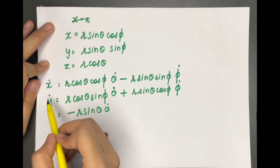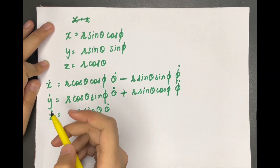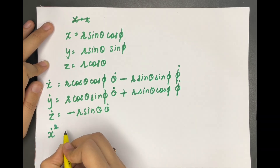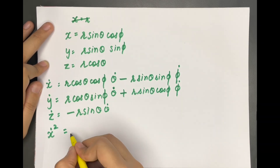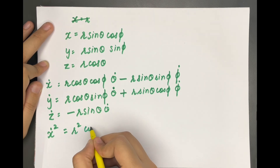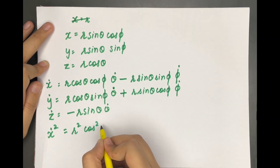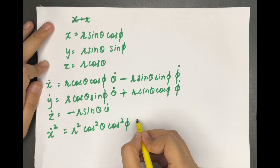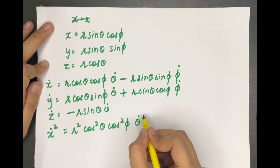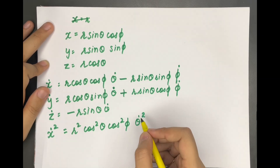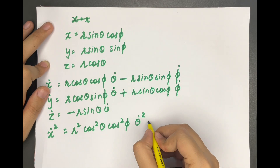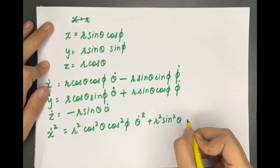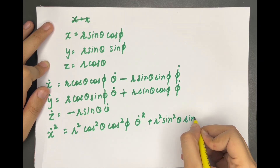Now we have to calculate ẋ², ẏ², and ż². So ẋ² = r² cos²θ cos²φ θ̇² plus r² sin²θ sin²φ φ̇² — with the cross term carrying a negative sign because of the minus sign in ẋ.